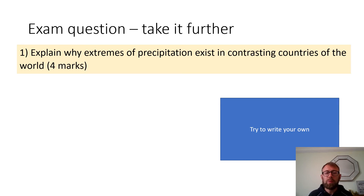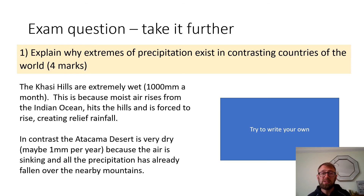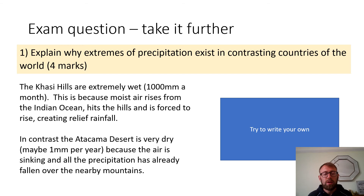If you want to take it further, you can think about explaining why extreme precipitation exists in different places. For example, the Khasi Hills in India can receive up to around 1,000 millimetres of rainfall a month at their most extreme — one of the wettest places ever recorded. This is because moist air rising from the Indian Ocean hits the hills and is forced to rise, creating relief rainfall. In complete contrast, the Atacama Desert — located next to a mountain range — has air that sinks and dries out, making it one of the driest places on earth.